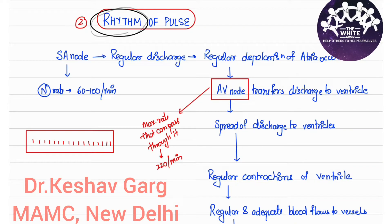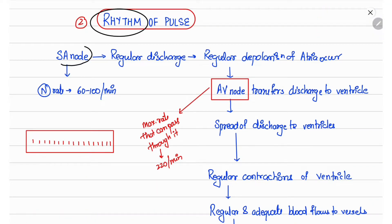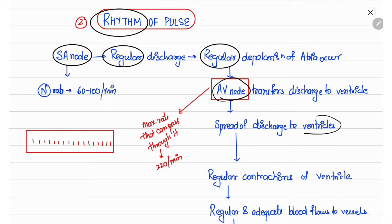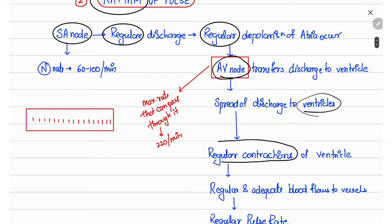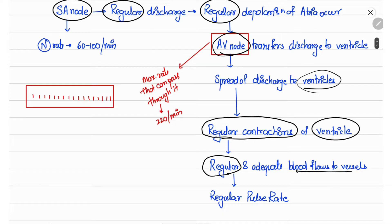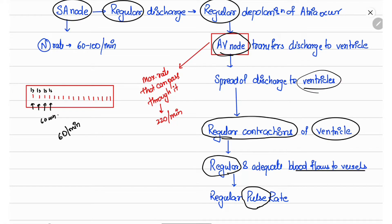Normally, the SA node produces electrical discharge at regular intervals, leading to regular depolarization of the atria, followed by transfer to the AV node and then to the ventricle. Regular contractions of the ventricle occur, producing adequate blood flow to the vessels. For example, with a heart rate of 60 per minute, the SA node produces a discharge every second, resulting in 60 contractions per minute.